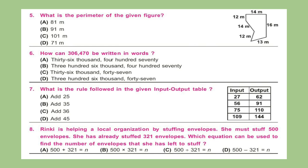Question 7: What is the rule followed in the given input-output table? Question 8: Rinky is helping a local organization by stuffing envelopes. She must stuff 500 envelopes and has already stuffed 321. Which equation can be used to find the number of envelopes she has left to stuff?